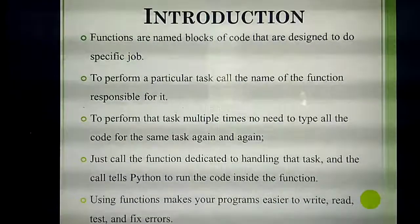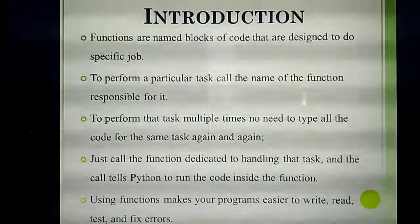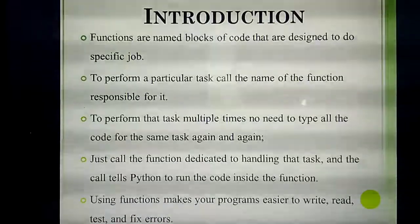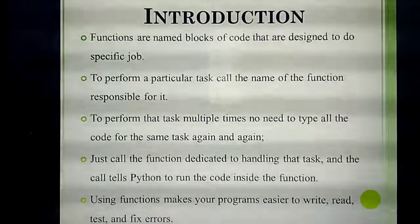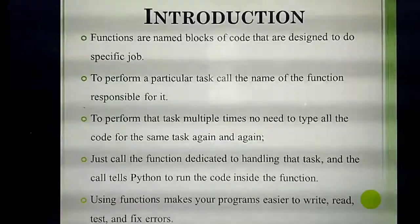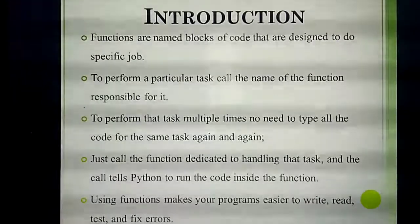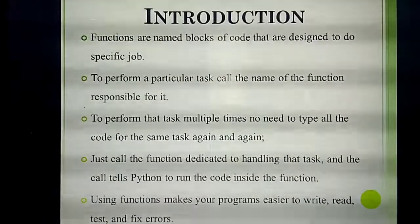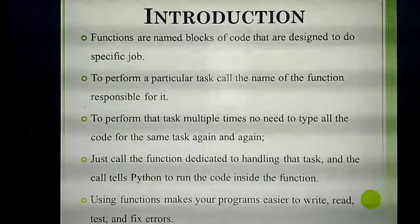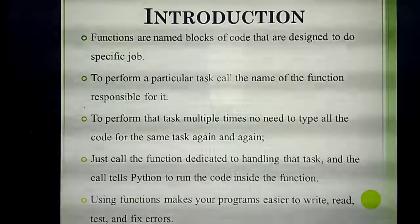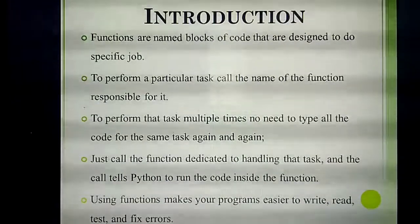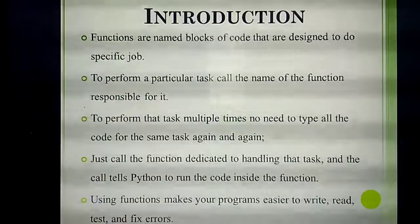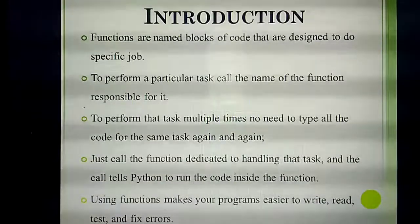Instead of writing 47 times, you simply call the name of the function — student of. If you call the student function, it will print the first student's details, then the second student's details, and so on.